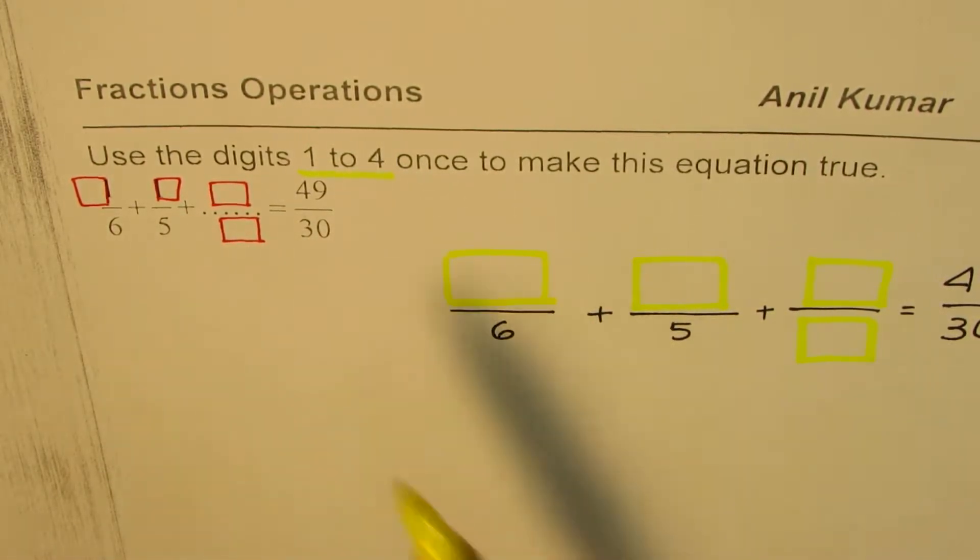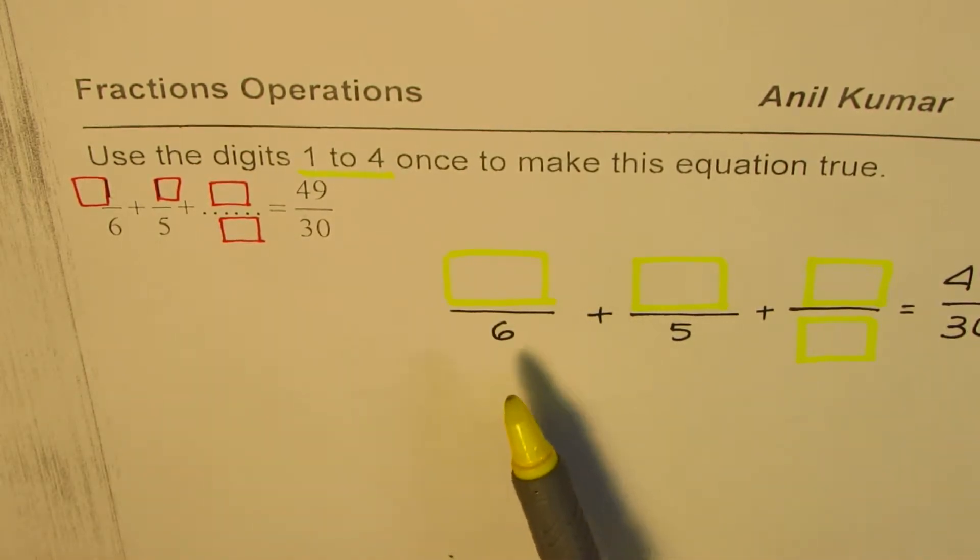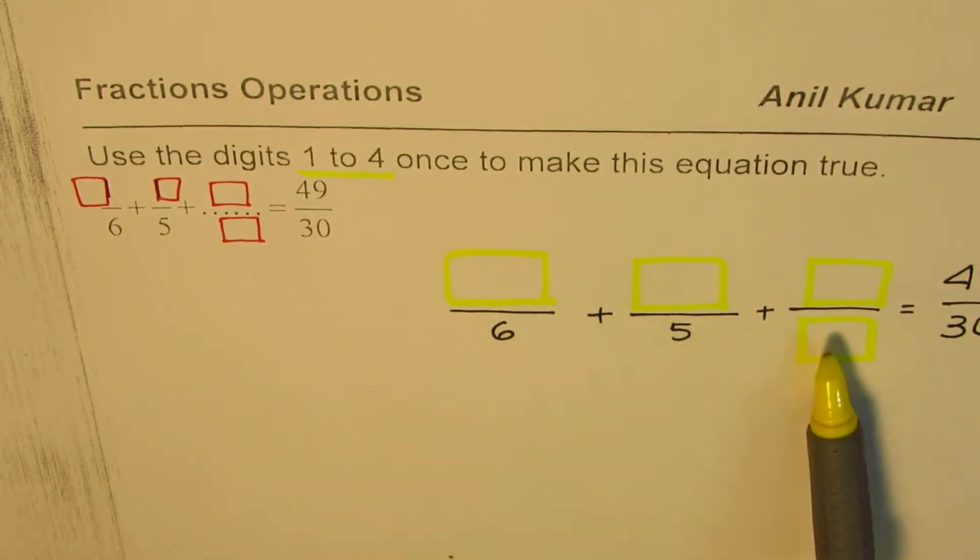So 1, 2, 3, 4 spaces to be filled with numbers 1 to 4, so that once we add these three fractions what we get is 49 over 30. So that is the question.